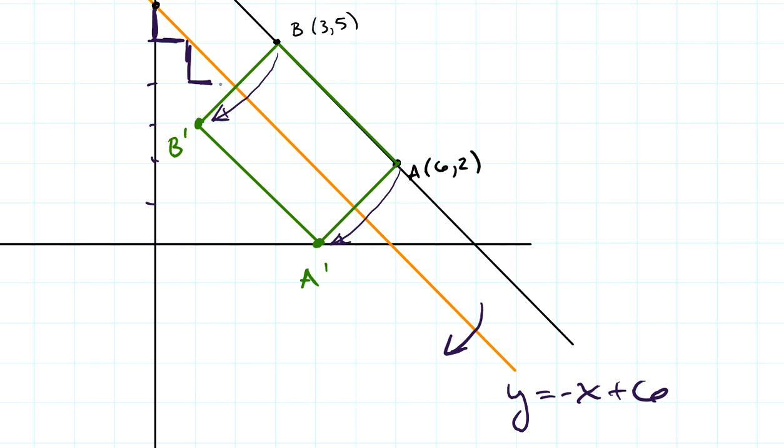And it asks me to reflect our line segment AB, this line segment, to reflect it across that line. And when I reflect it across it, what ends up happening is I get this new line segment right here. And this ends up making a very nice rectangle. And I could probably calculate the dimensions of the rectangle if I wanted to, but they're not asking that. I'm just going to go ahead and say it is a rectangle.